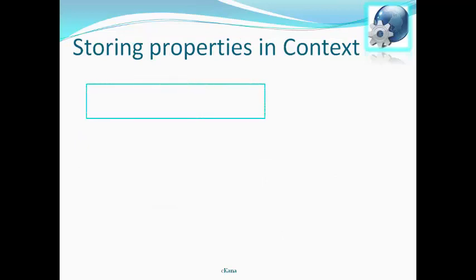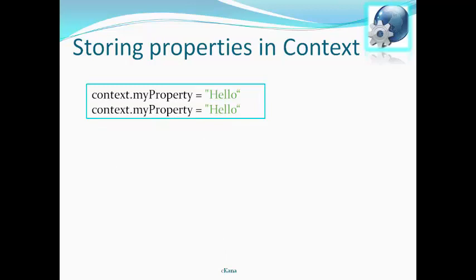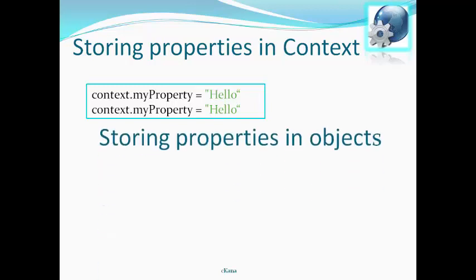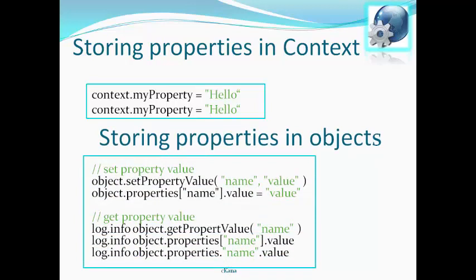Storing properties in context: we need to store values that can be used in subsequent test steps or related scripts for later use. We create a property named myProperty in the context and assign it the string 'hello'. To store properties in objects, we use the setPropertyValue method, or object.properties indexed by the property name with .value to assign a value. We can get property values using the getPropertyValue method, by indexing the property name, or by accessing the name directly.